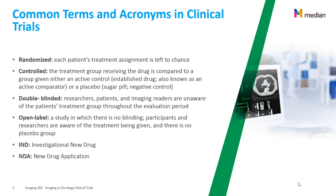Here is a list of common terms and acronyms used in clinical trials. Randomized is when each patient's treatment assignment is left to chance. Controlled is when the treatment group receiving the drug is compared to a group given either an active control or a placebo. Active control is an established drug and is also known as an active comparator. A placebo can be a sugar pill and is called a negative control. Double-blinded means researchers, patients,